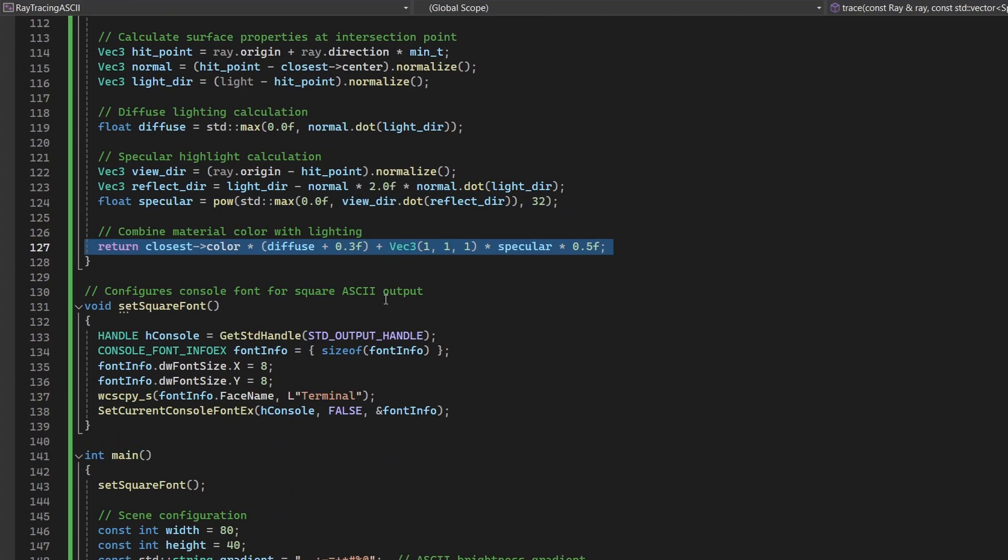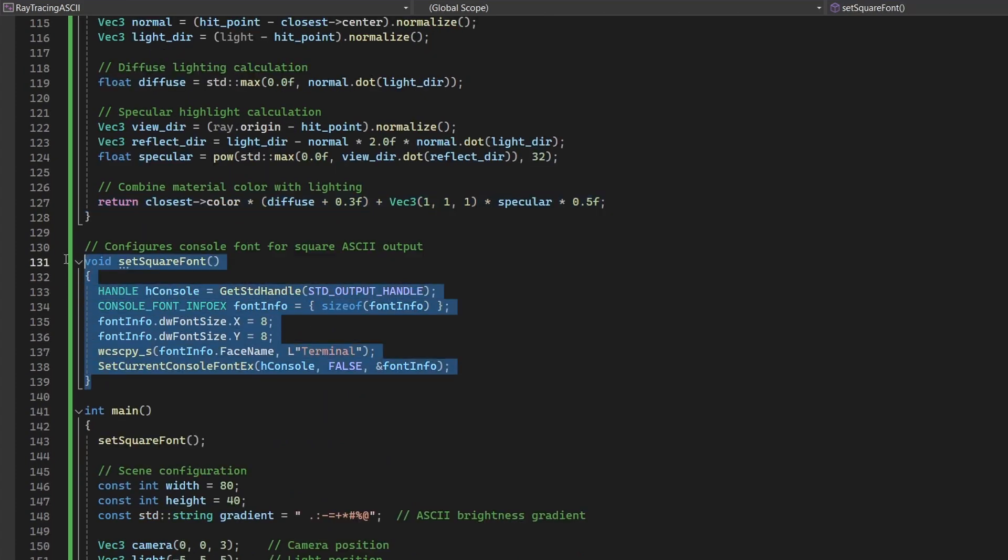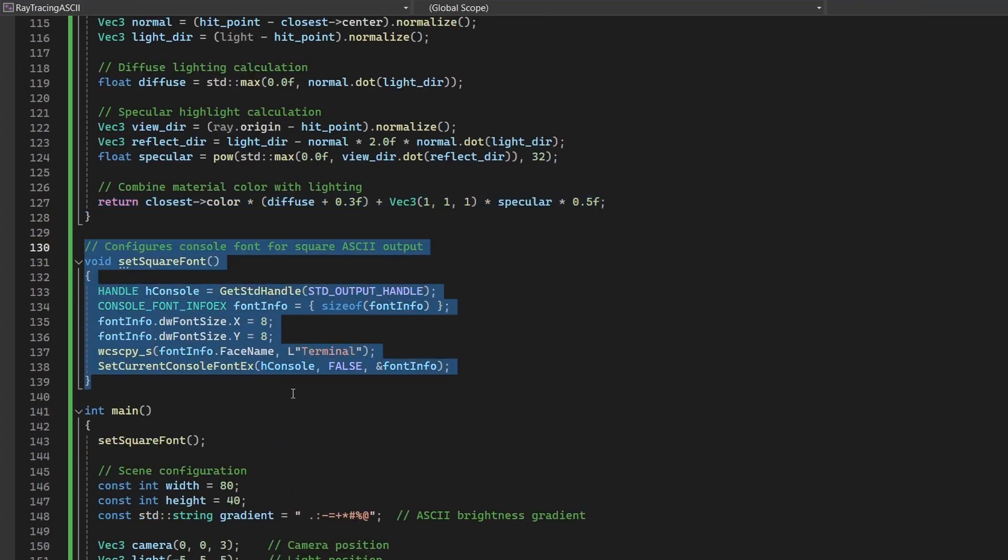This function adjusts the console font settings to ensure that characters are displayed with square proportions. This is necessary because non-square fonts can distort ASCII art output. Using Windows API functions, it sets both font size and typeface to achieve consistent rendering. This is Windows-specific, so for any other operating system, you should do something different.